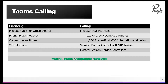Licensing isn't the full equation when you're looking at telephony. Another big component is calling and how you get calls in or out of the PSTN. There are a couple of ways of doing it. You can get calling plans from Microsoft, which will give you a DDI and SIP trunks out onto the PSTN. They have 120-minute or 1,200-minute domestic minute plans.